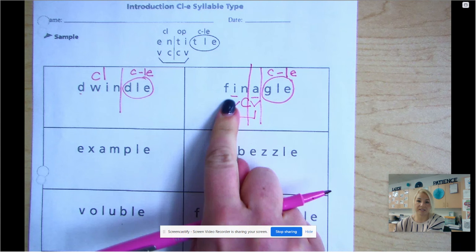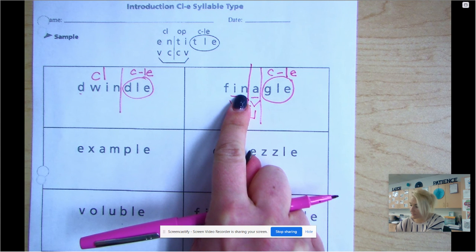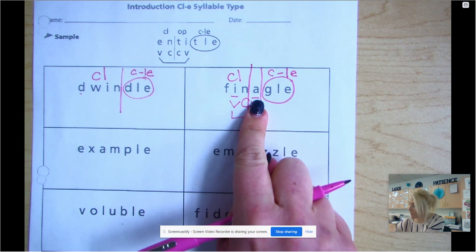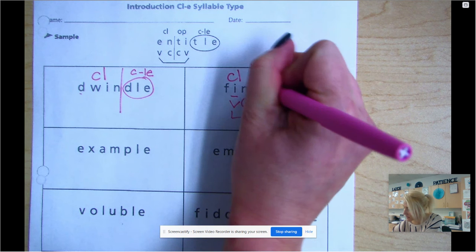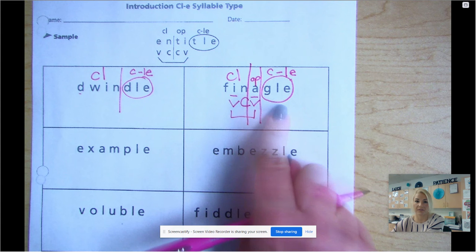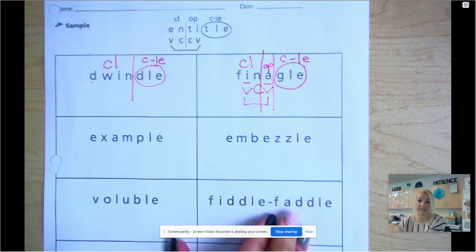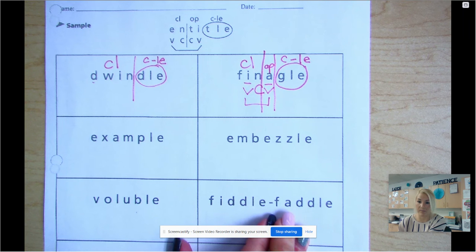So I'm going to go ahead and divide here. So I have two syllables I have to label. Fin, which is closed because I have I. And then A, that's open. Gul. Finagle. Finagle. Later on I can look up these words if I don't know their meanings, and you can do that at home as well.